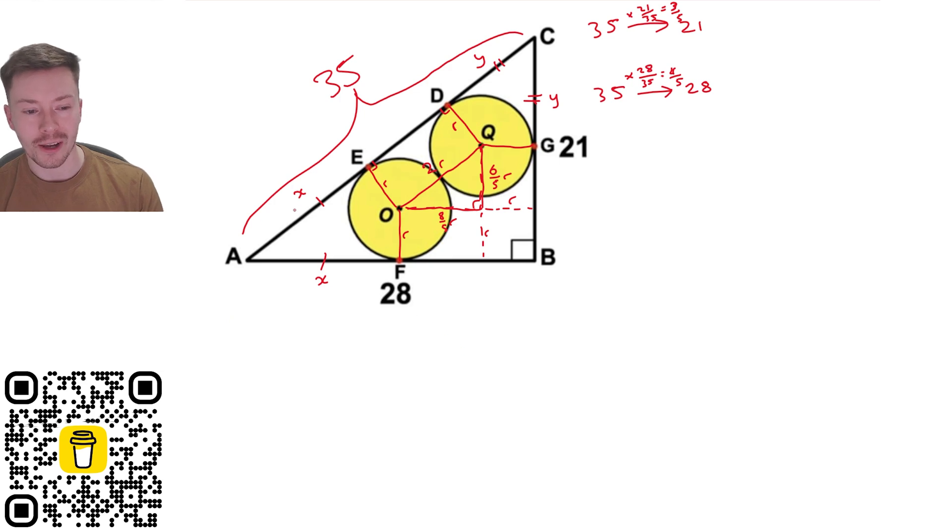Now what I can do from there is I can start forming some equations so I've got x add this bit which is 2r plus y so x add 2r add y is equal to 35 the full length. Now if I do that with my base I've got x add 8 fifths r add r because x add 8 fifths r this bit here add r here the rest of the way and that has got to be equal to 28. Now the last bit is the vertical so again that's going to be r and then plus six fifths r and then plus y is equal to 21 so r plus six fifths r plus y is equal to 21.